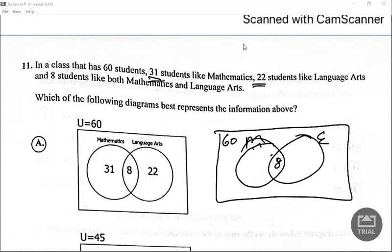So we can just subtract, which gives us 23. So here would be 23. And they said 22 students like science, so it should be 22.